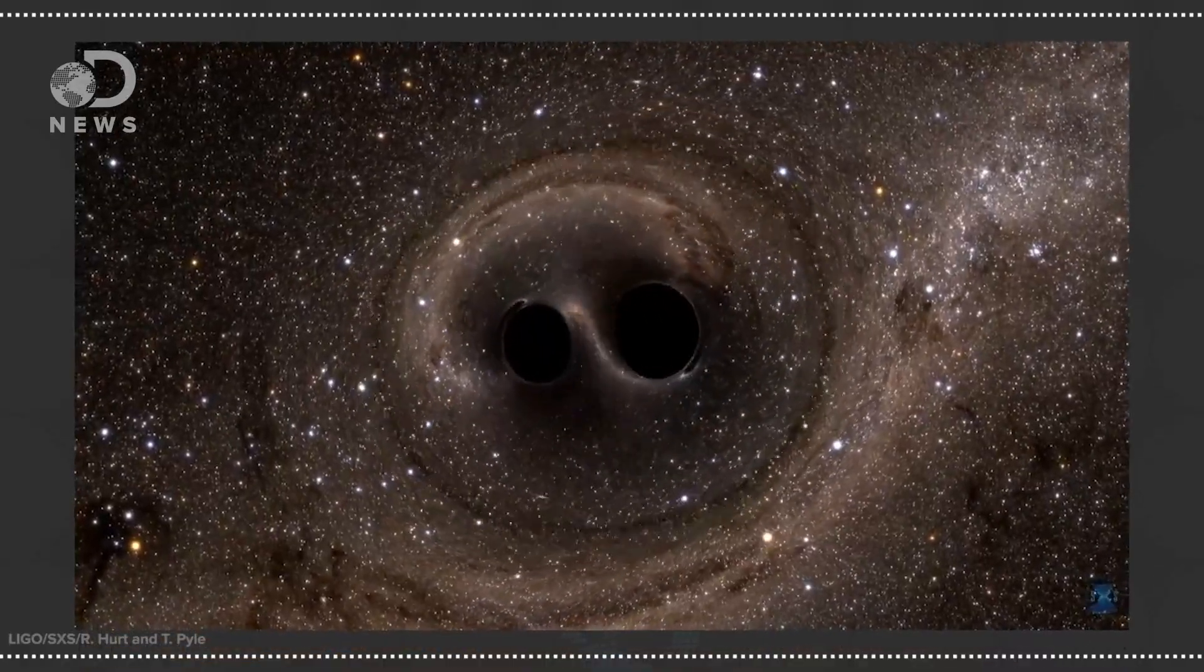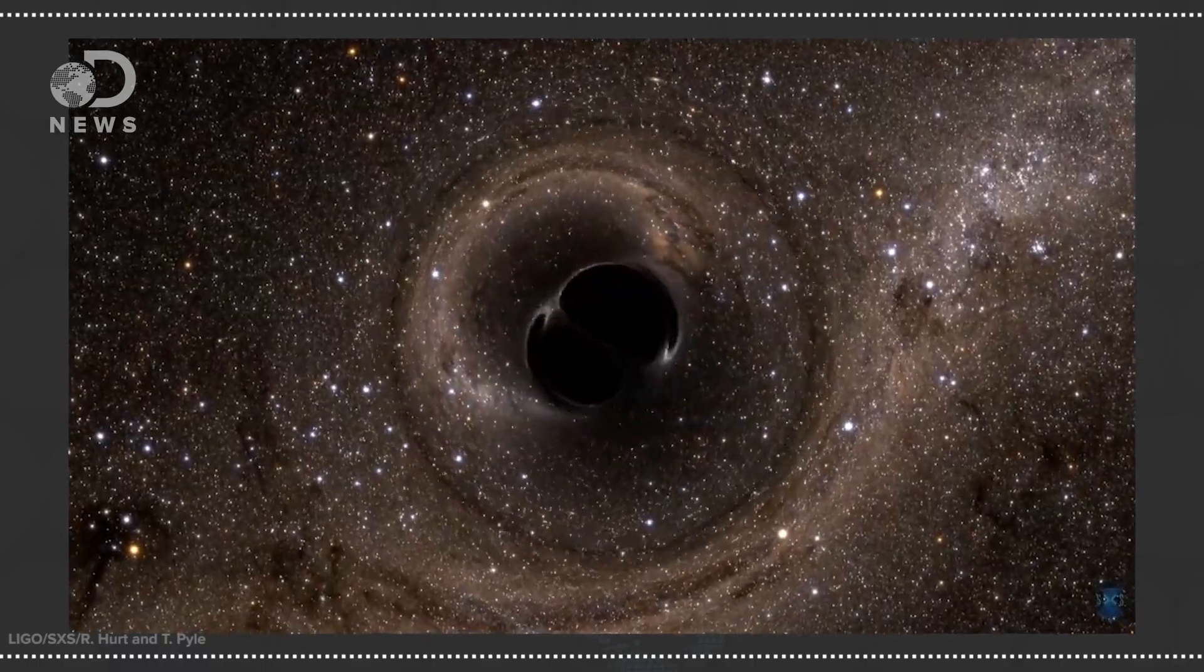A long time ago in a galaxy far far away, two black holes collided in a fateful swirling waltz. Just like when you toss a rock into a pond and the kerplunk creates ripples on the surface of the water, this collision sent ripples through the fabric of spacetime, and we finally detected one of these ripples, or as researchers call them, gravitational waves.